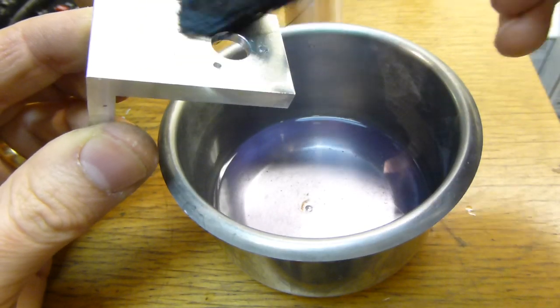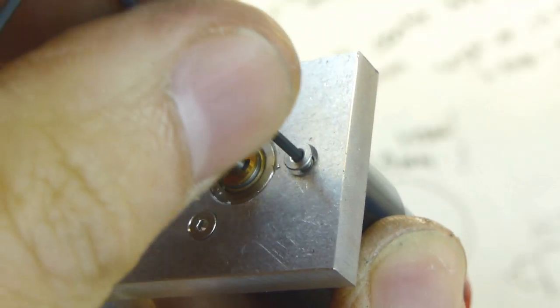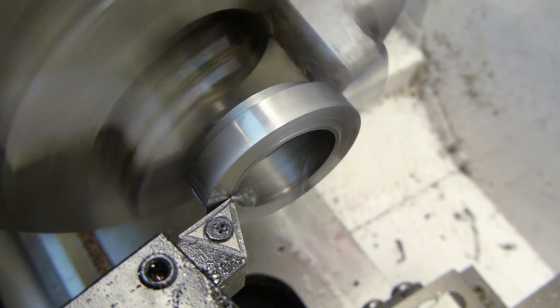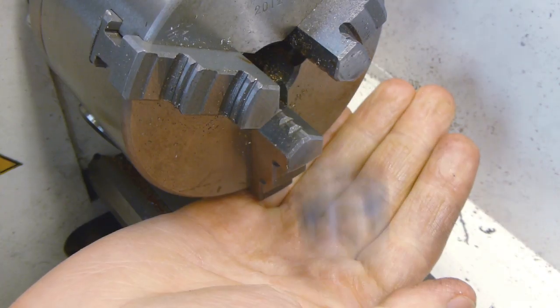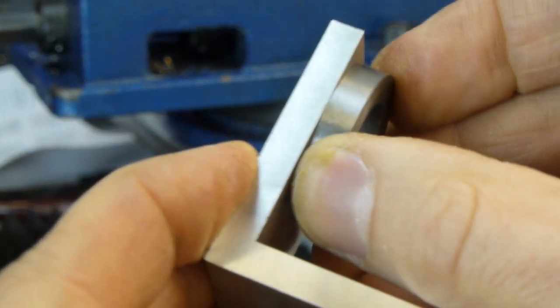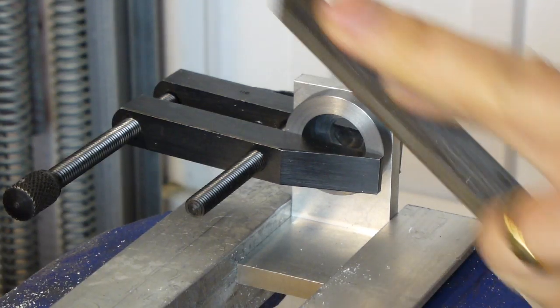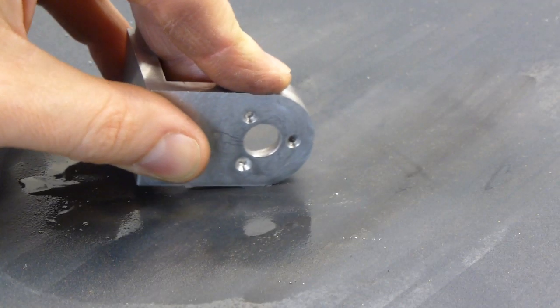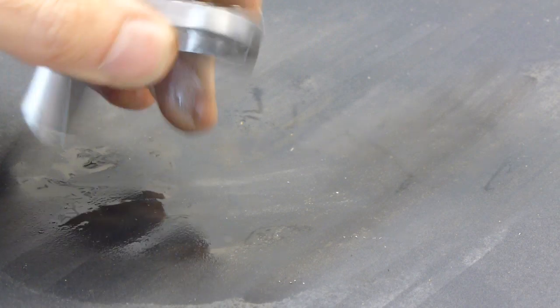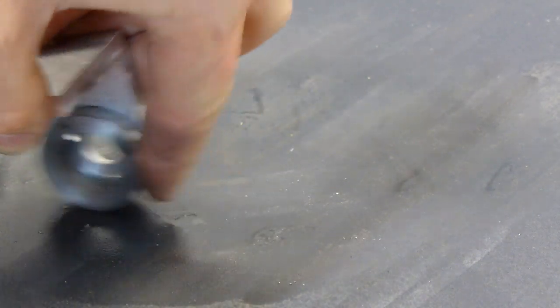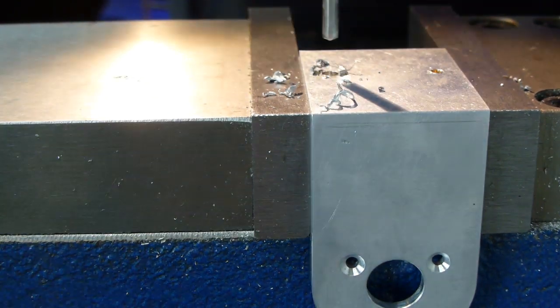A tickle with a blow lamp releases the bond, and then a clean up with some acetone removes the excess glue. I wanted to take the sharp corners off the bracket, so I turned up a bush from a scrap of steel tube to use as a filing guide. All that remained was to drill a couple of fixing holes, and the motor bracket was finished.